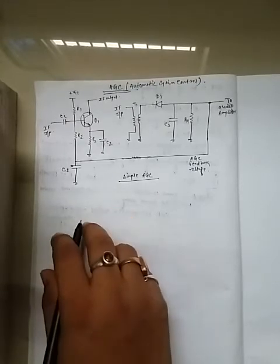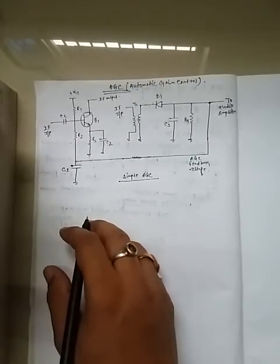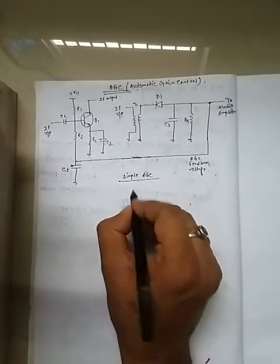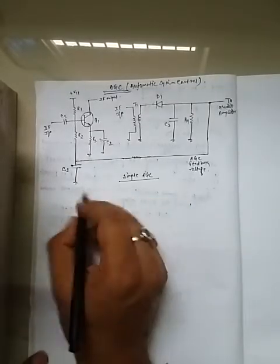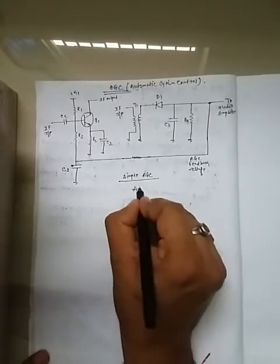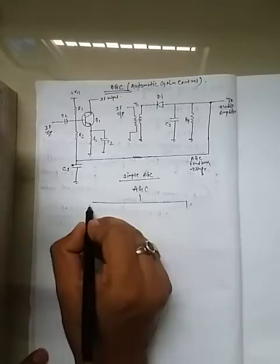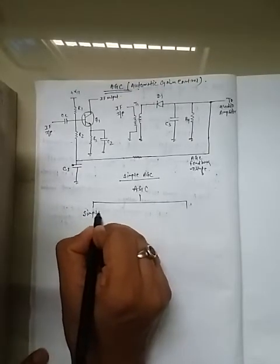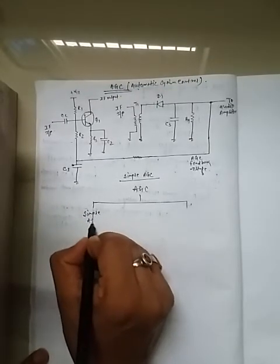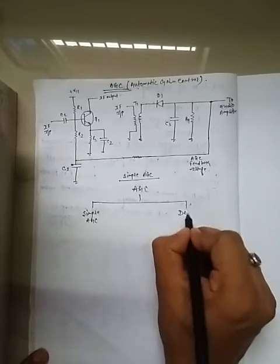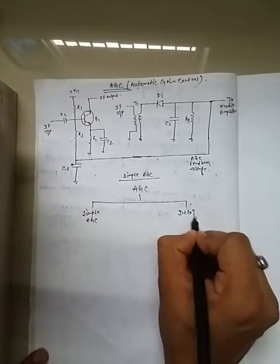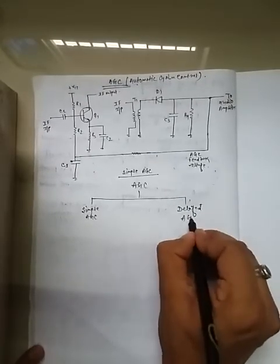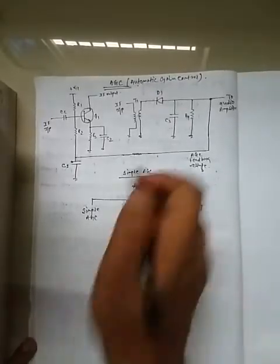There are two types of AGC circuits: Simple AGC and Delayed AGC circuit. Here I discuss the Simple AGC circuit.